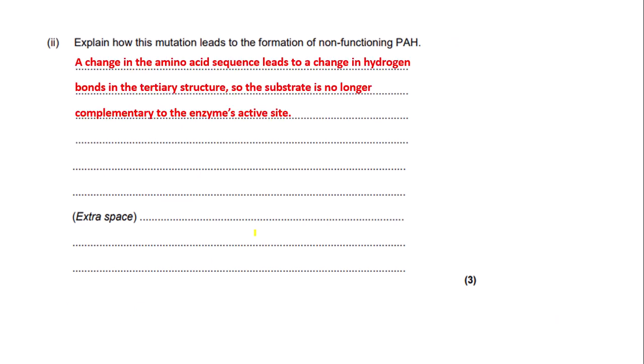The next question asks: explain how this mutation leads to the formation of a non-functioning PAH. This crosses over with the meiosis and gene mutation section, basically asking what effects mutations can have on an enzyme. As it is an explain question, you need to justify your answer, not just describe. I've written: a change in the amino acid sequence leads to a change in the hydrogen bonds in the tertiary structure, so the substrate is no longer complementary to the enzyme's active site.